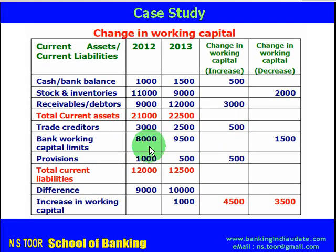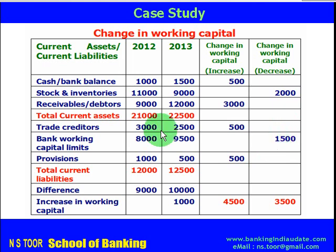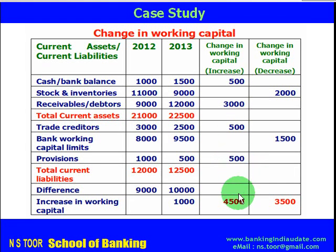Bank working capital limit outstanding balance increased from 8,000 to 9,500. Since the balance increased, this is an increase in current liability, which means a decrease in working capital — so we place it under decrease in working capital. Provisions declined from 1,000 to 500, a decrease in current liability, so this is recorded under increase in working capital. The total increase in working capital comes to 4,500, the total decrease to 3,500, and the net change is an increase in working capital of 1,000.